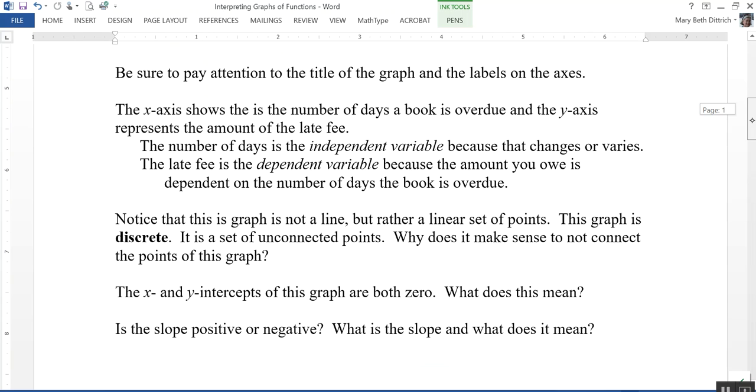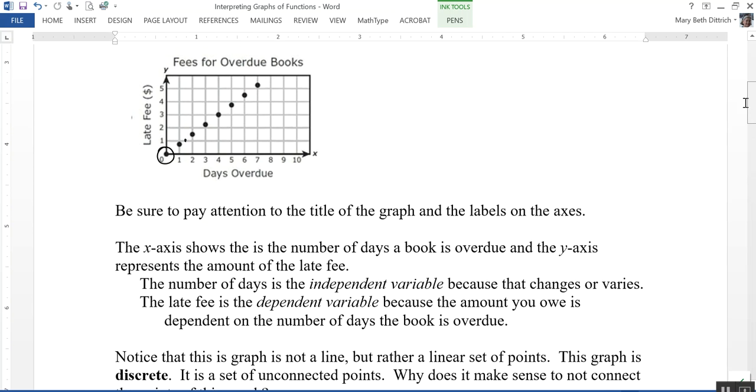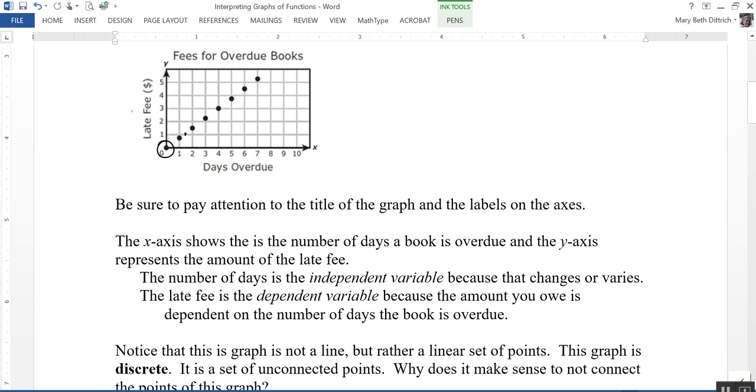And is the slope positive or negative? What is the slope and what does it mean? This is going to have a positive slope because the graph is basically going up. Even though it's not a line, you can tell that it's basically going up. And what is the slope? The slope is probably a little less than one because you'll notice that after one day, hard to tell exactly what the late fee is, but it might be something like maybe 80 or 90 cents, not quite a dollar.